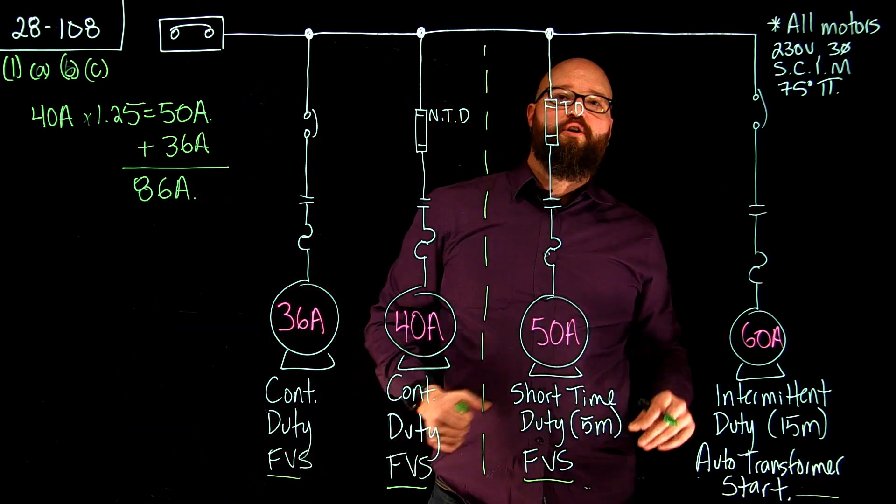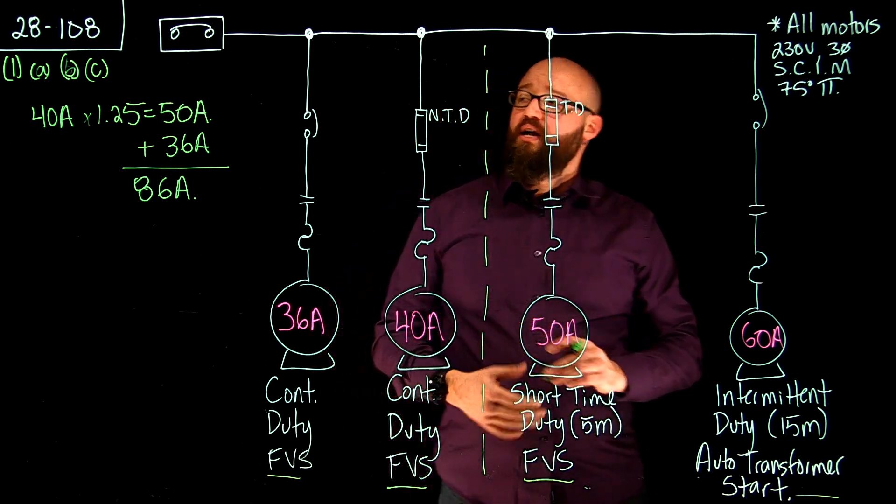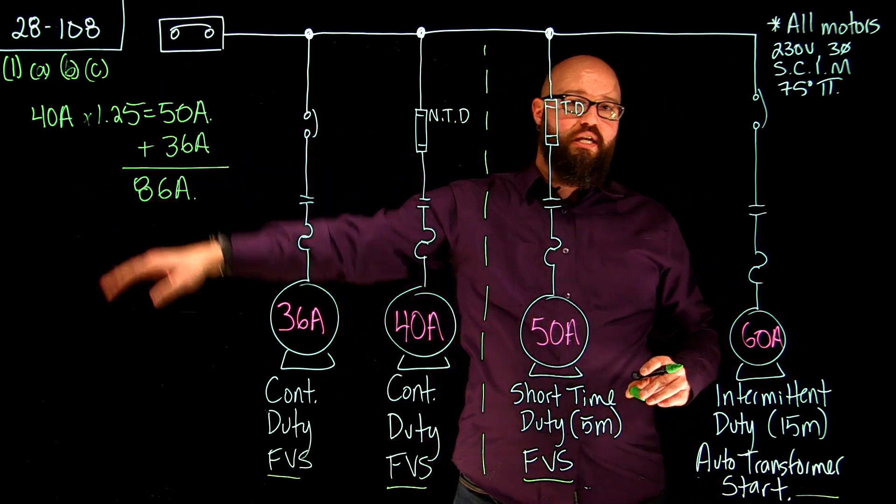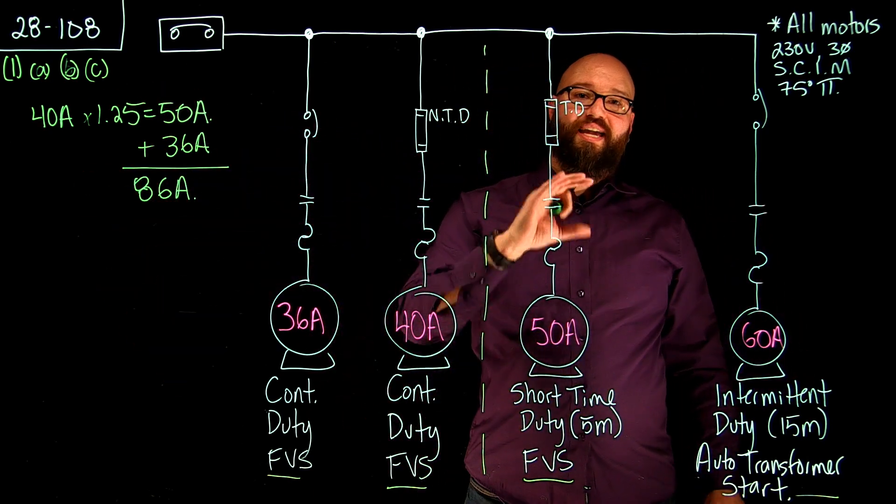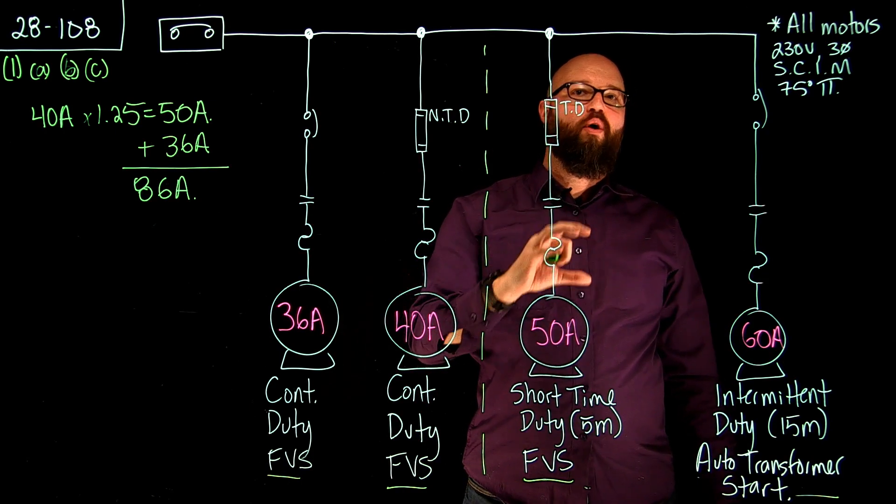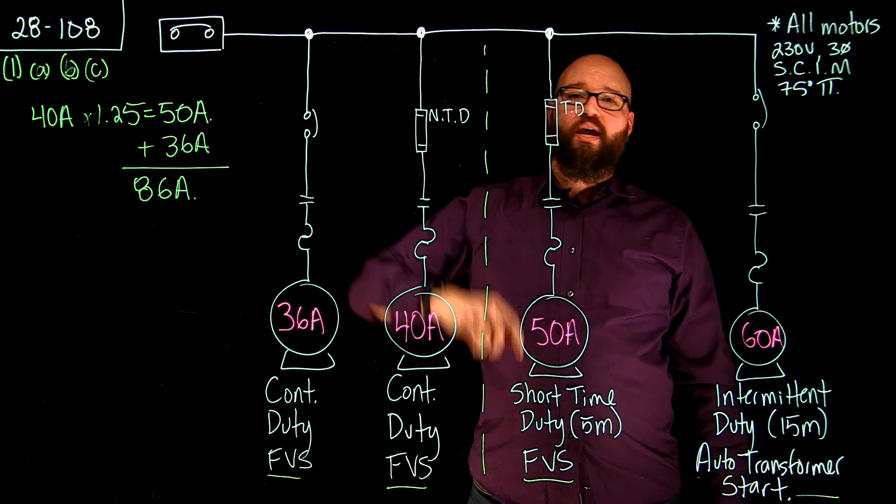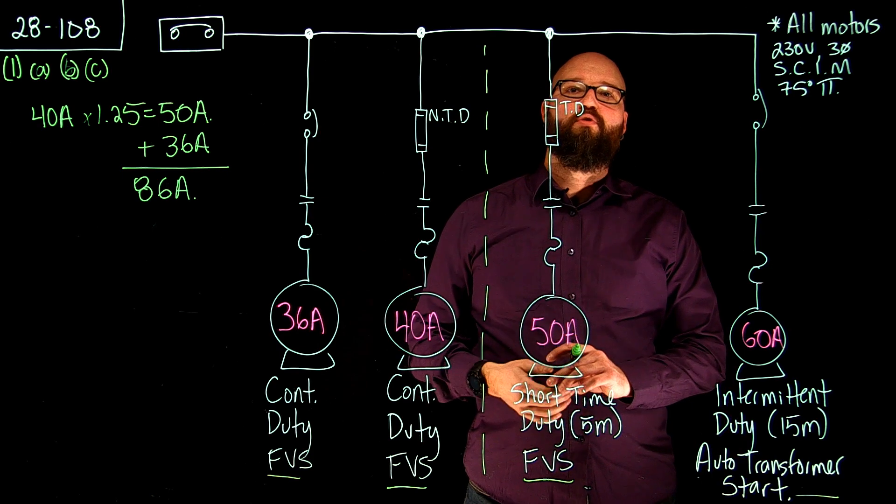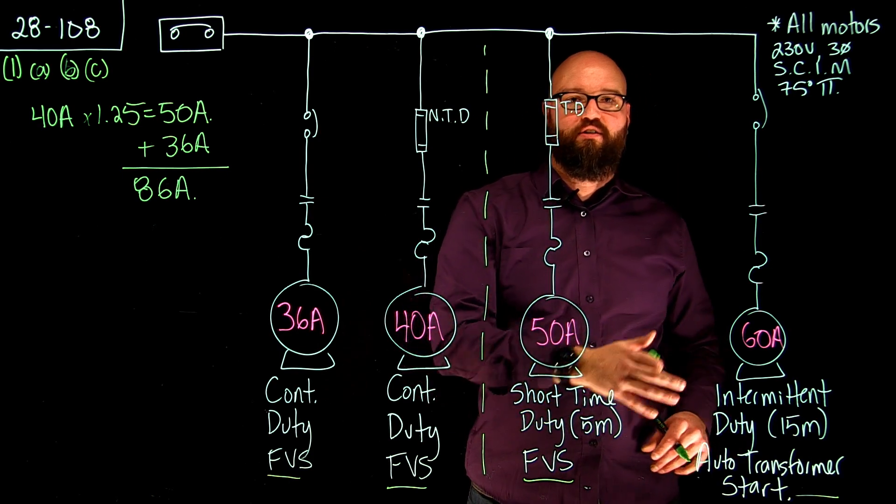Now we're going to move over to our non-continuous motors. And it tells me also in Item C that we're going to take the calculated value of each one of these as in accordance with 28.106 sub rule 2, where we went and individually sized these branch circuit conductors.